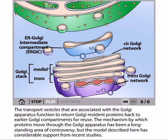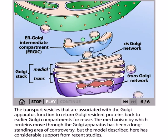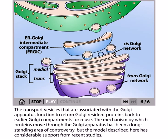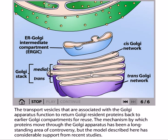There is also a cisternae maturation model. In this model, it is suggested that the cis-Golgi network gradually slides toward the trans-medial Golgi region, the medial Golgi portion slides toward the trans-Golgi region, and what is present in the trans-Golgi region buds out and fuses with the cell membrane. So the cis becomes medial, the medial becomes trans, and the trans becomes part of the cell membrane. This is called the cisternae maturation model.